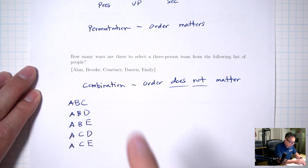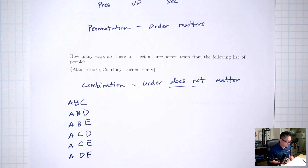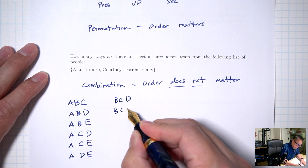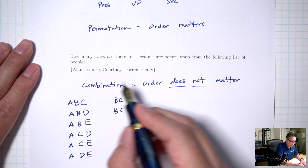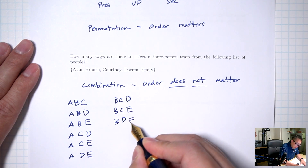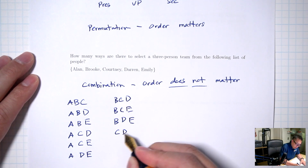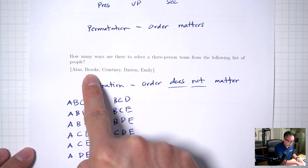For vice president, remember that since we're picking people, no repetitions are allowed. I already picked one person for president, so I'm down to four people. For secretary, I've chosen two people already, so I'm down to three. Then you multiply these together: five times four times three, which is 60. There are 60 ways to choose a president, vice president, and secretary from this list.